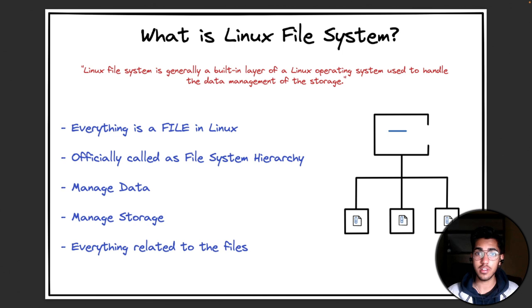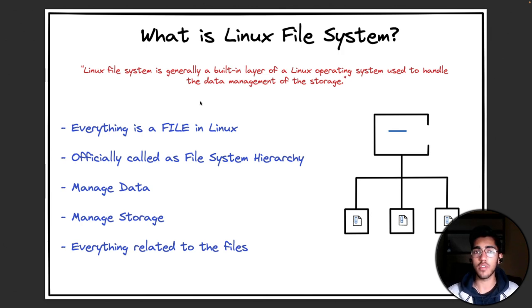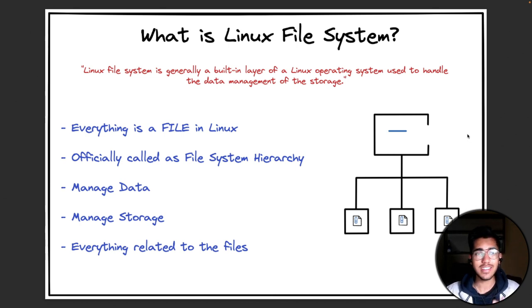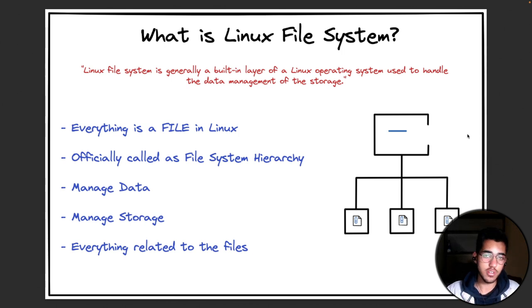If you were to search on Google what exactly is the file system, you would come across this line: 'Linux file system is generally a built-in layer of a Linux operating system used to handle the data management of the storage.' All in all, everything in Linux is a file. The network settings that you do, the commands that you type in your operating system — that is a file. So the file system is basically the built-in layer in your operating system that is used to manage all these particular files, the data that you are storing, and the storage devices that you are using.